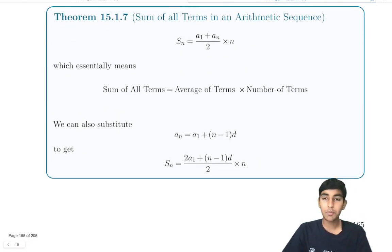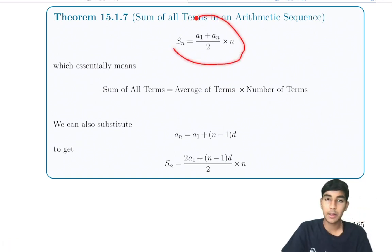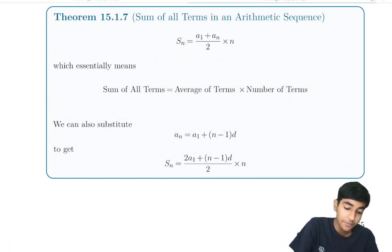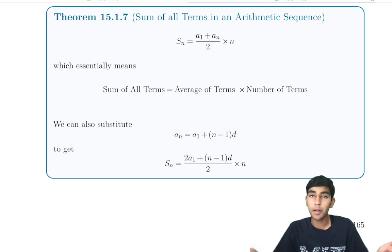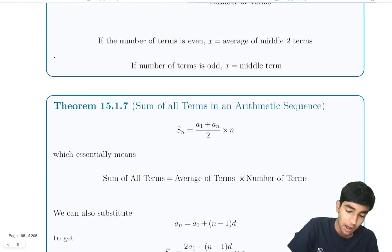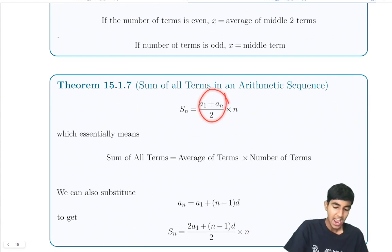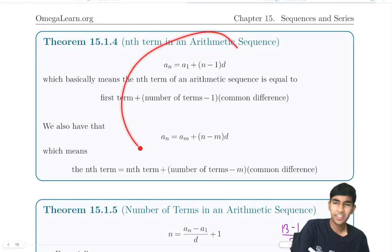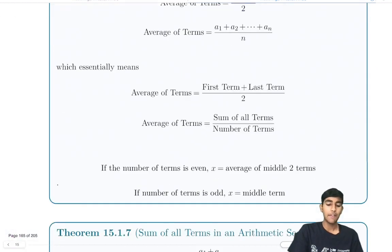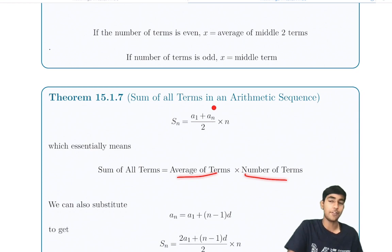Here is another very important formula. The sum of terms in an arithmetic sequence is the average of the terms times the number of terms. Average times number equals sum. And the average, as noted above, is just the first and last term summed and divided by 2. You can do various substitutions using this formula, but the key is understanding that sum equals average times number and knowing how to find the average.